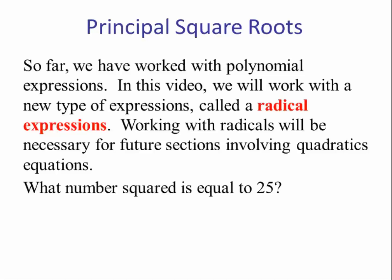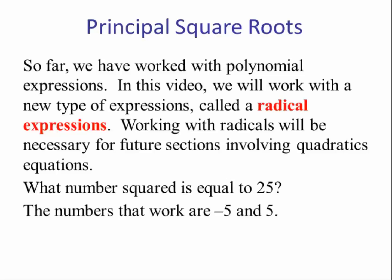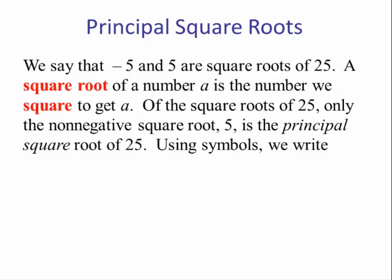What number squared is equal to 25? If you think about it there are two: negative 5 and 5. Negative 5 times negative 5 is 25, and 5 times 5 is 25. So we say that negative 5 and 5 are square roots of 25. A square root of a number a is the number we square to get a. Of the square roots of 25, only the non-negative square root 5 is the principal square root of 25.